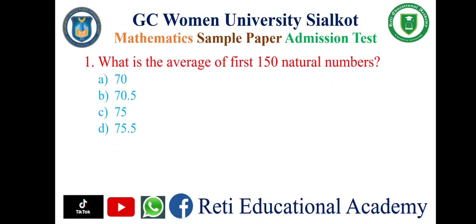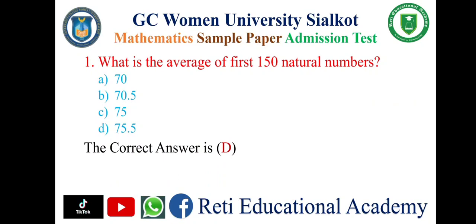Question number one: What is the average of first 150 natural numbers? A: 70, B: 70.5, C: 75, D: 75.5. And the correct answer is D: 75.5.